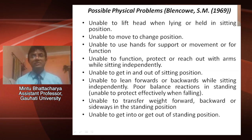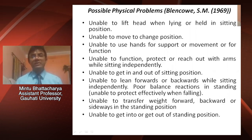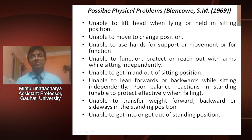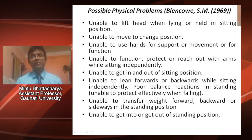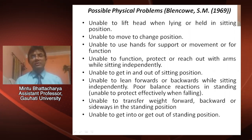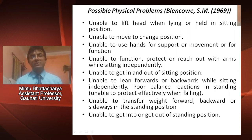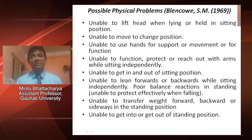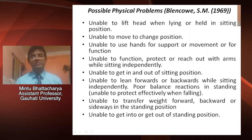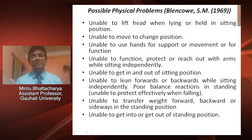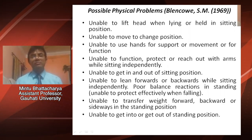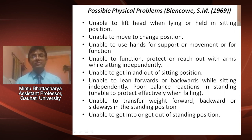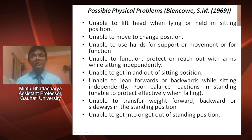The possible physical problems seen in cerebral palsy include: unable to lift head when lying or held in a sitting position; unable to move to change position; unable to use hands for support, movement, or function; unable to protect or reach out with arms while sitting independently; unable to get in and out of sitting position; unable to lean forward or backwards while sitting independently; poor balance reactions in standing, that is, unable to protect effectively when falling; unable to transfer weight forward, backward, or sideways in standing position; and unable to get into or out of standing position.